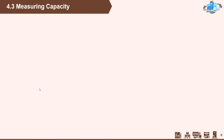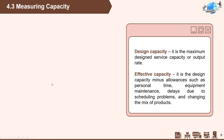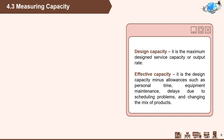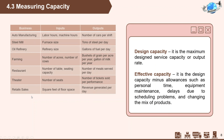As mentioned earlier, capacity planning can be refined into two useful definitions: design capacity and effective capacity. Design capacity is the theoretical output, while effective capacity is the real maximum outcome. Effective capacity is always less than the design capacity owing to realities of changing product mix, the need for periodic maintenance of equipment, lunch breaks, coffee breaks, problems in scheduling and balancing operations, and similar circumstances. Actual output cannot exceed effective capacity and is often less because of machine breakdowns, absenteeism, shortages of materials, and quality problems, as well as factors outside the control of operations managers.